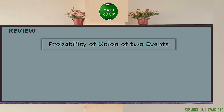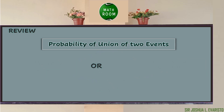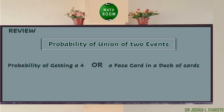We will also solve problems involving dependent events and independent events. On our previous lesson, we talked about the probability of the union of two events, which can be in the form of mutually exclusive or non-mutually exclusive events. Both of these can be calculated using the addition rule, and the conjunction used is 'or'.